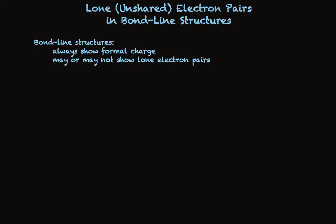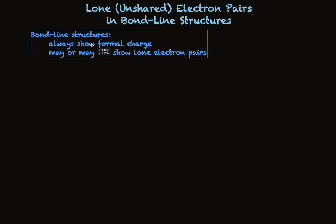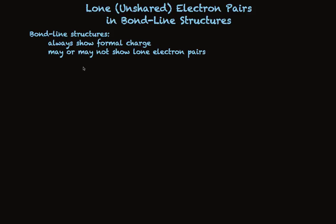The fact is that whether the lone pairs are shown or not depends on what the person who drew that structure thinks is best, and whether somebody believes it is particularly important to show them to explain something. So not everybody uses the same thinking to decide whether to show the lone pairs or not. So I thought we'd better go through some structures that will have lone pairs and look at examples of how we can figure out that they're really there.